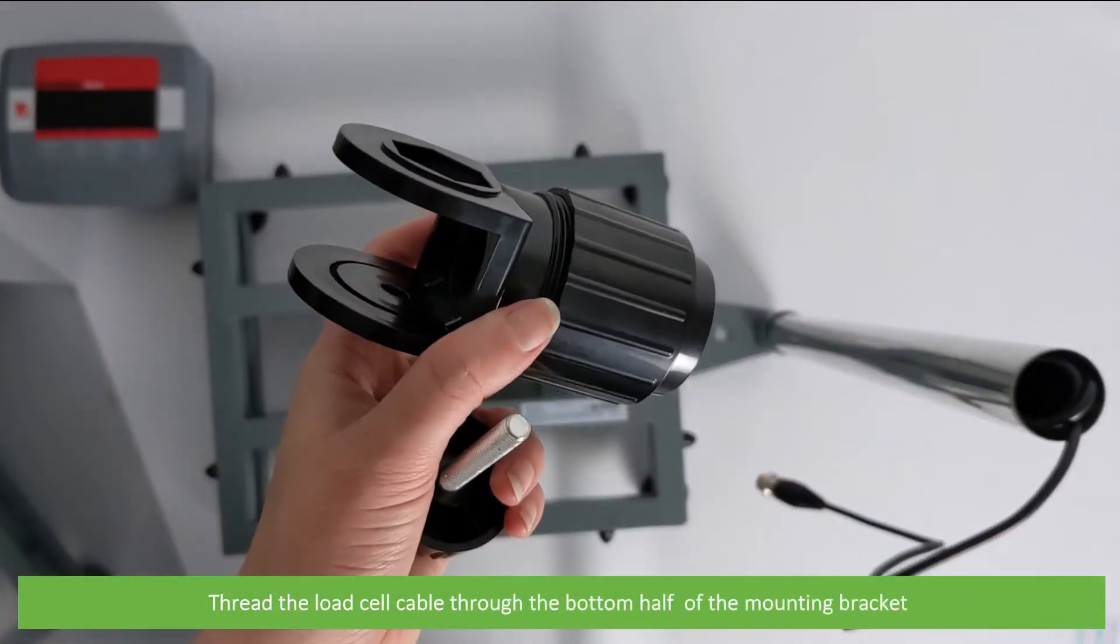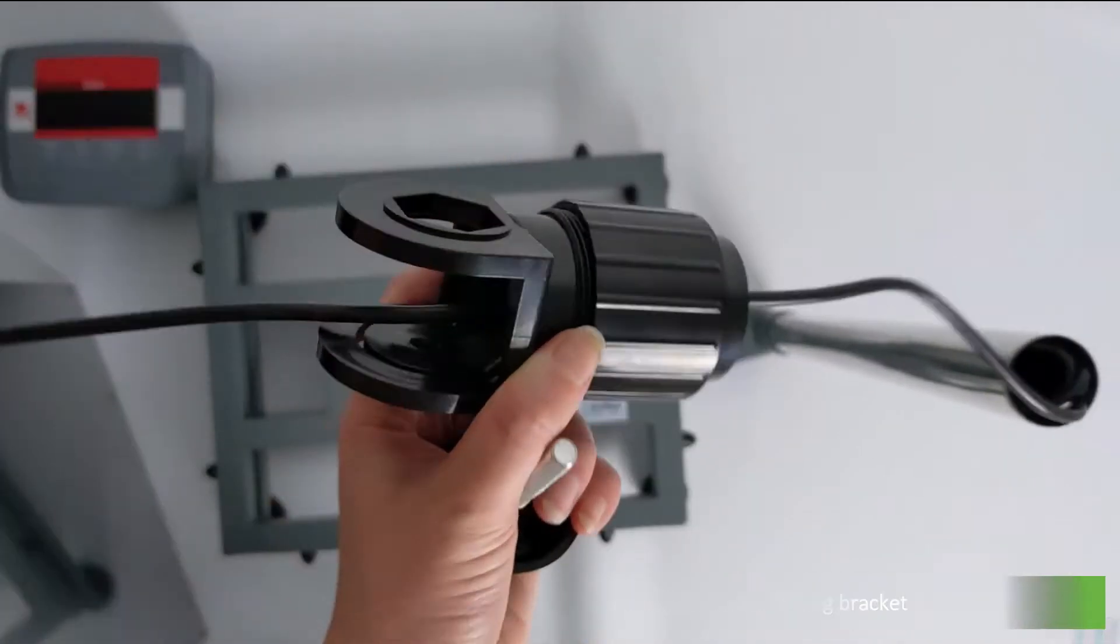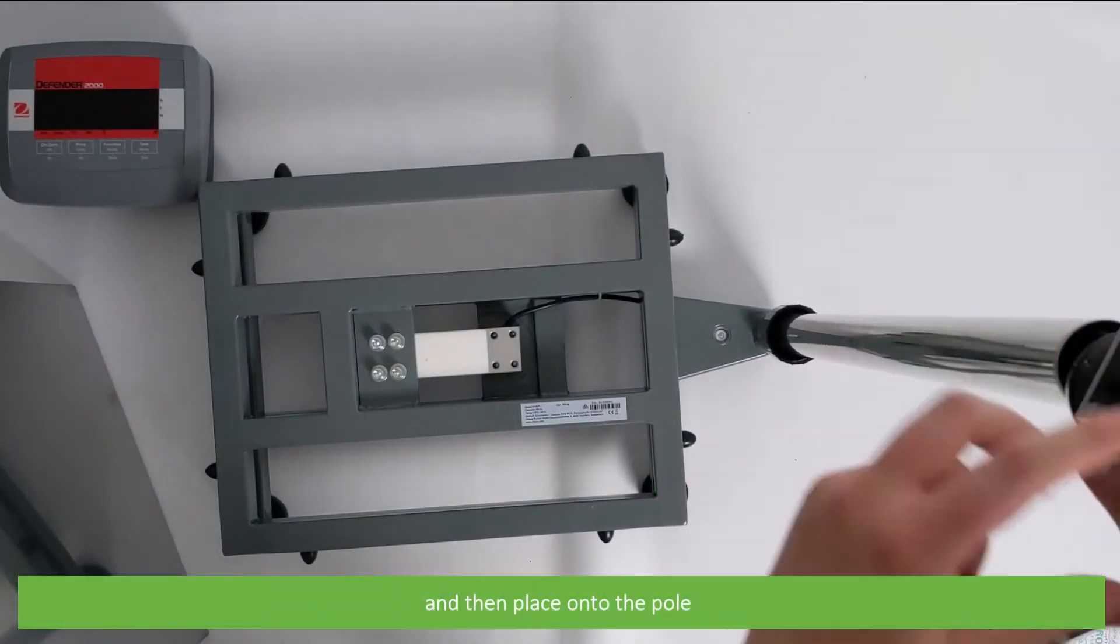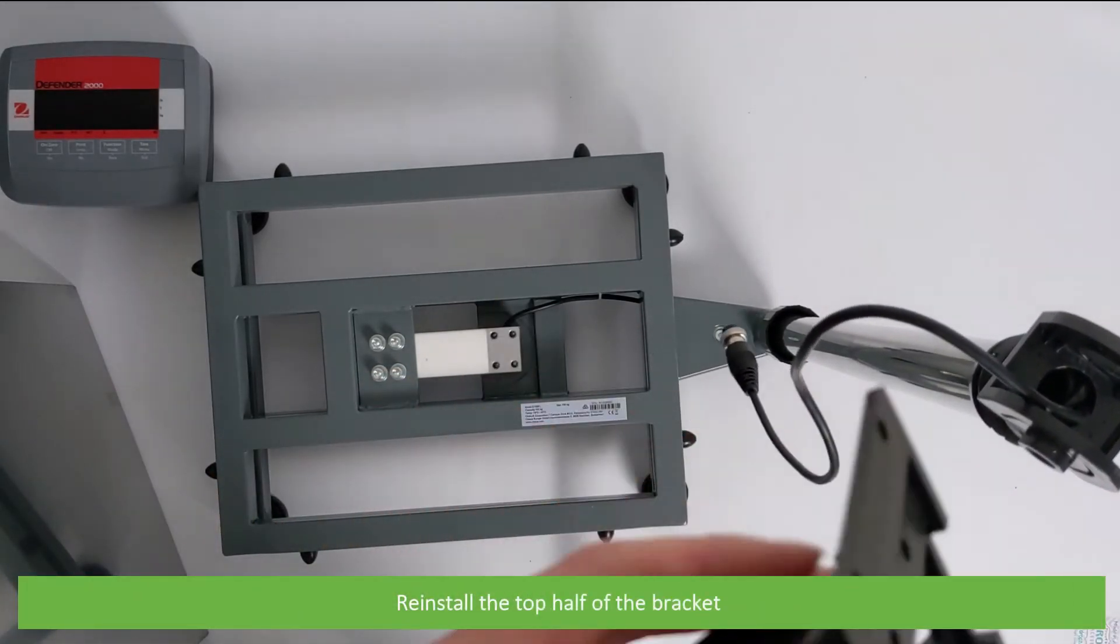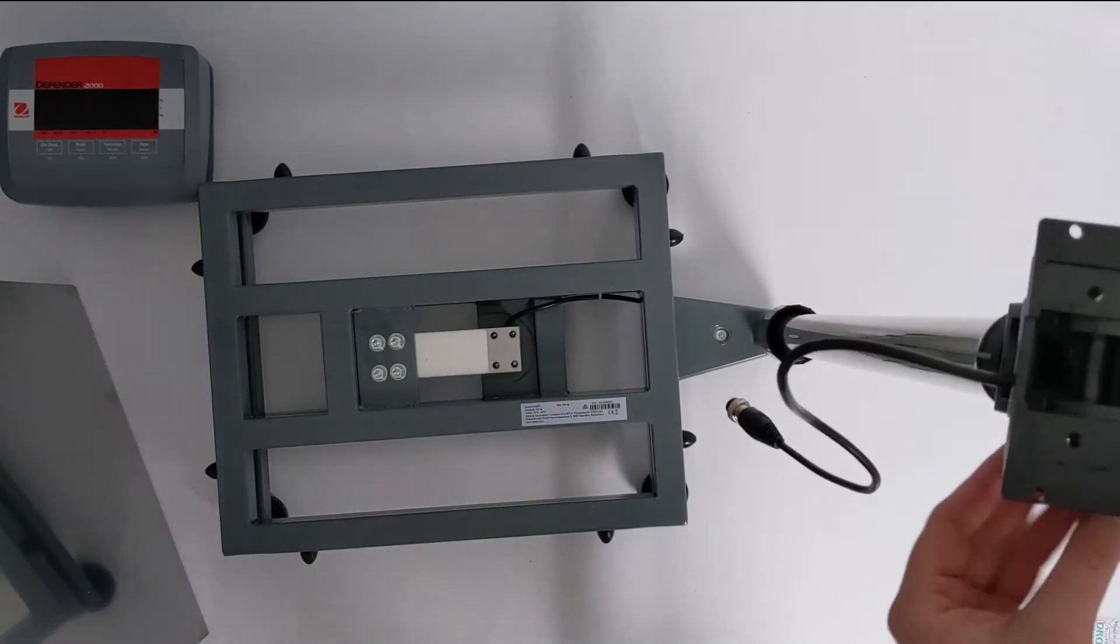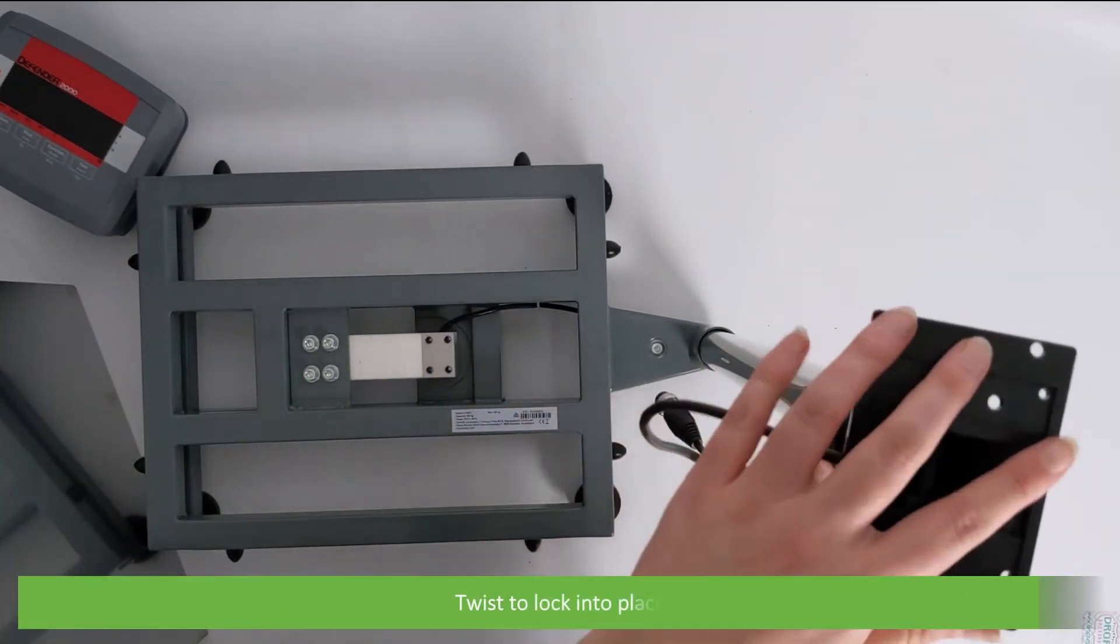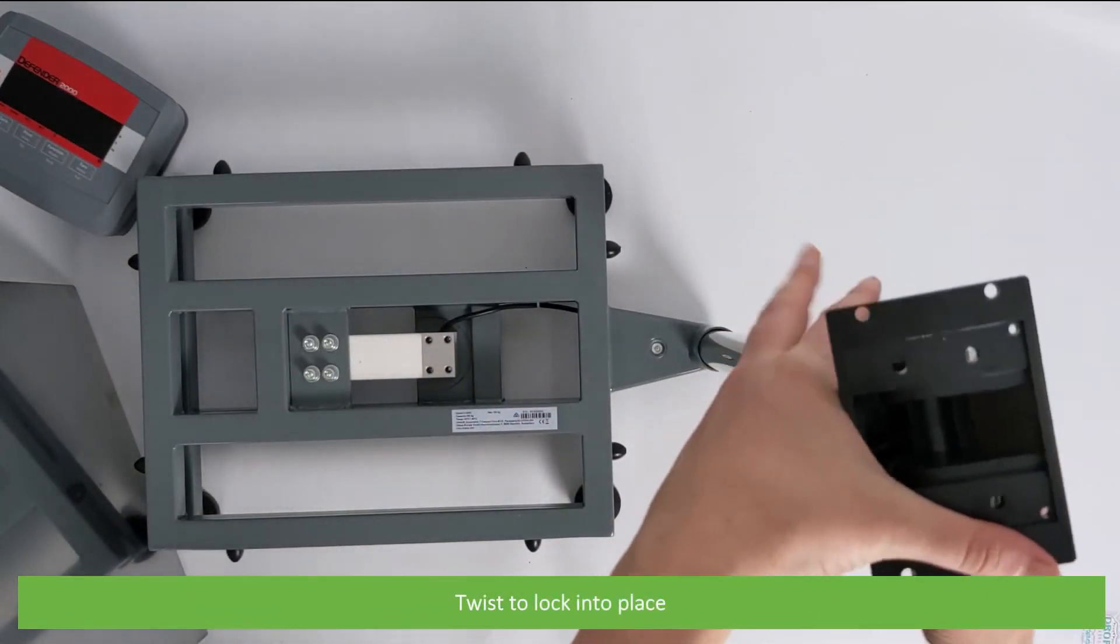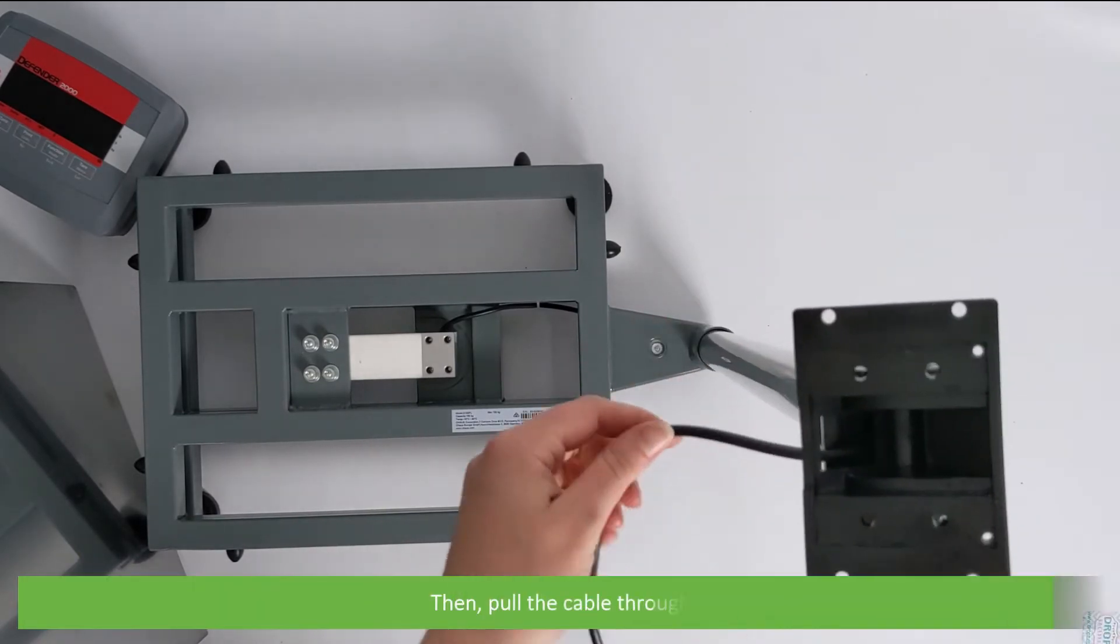Thread the load cell cable through the bottom half of the mounting bracket. Then, place onto the pole. Reinstall the top half of the bracket. Twist to lock into place. Then, pull the cable through.